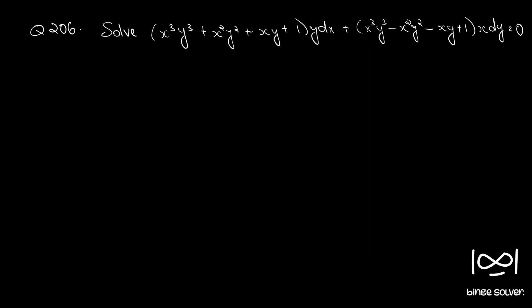Question number 206. Solve x³y³ + x²y² + xy + 1 into y dx plus x³y³ minus x²y² minus xy + 1 into x dy equal to 0.